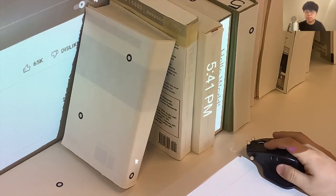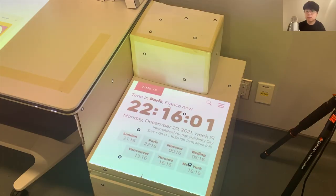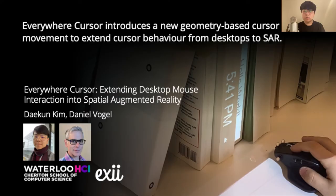With fast mouse movement, the user can also jump across crevices and skip cliffs to allow for faster interaction. To conclude, Everywhere Cursor introduces a new geometry-based cursor movement to extend cursor behavior from desktops to SAR. We plan on evaluating its strengths and weaknesses with a user study in the future. Thank you.